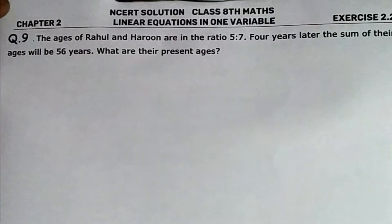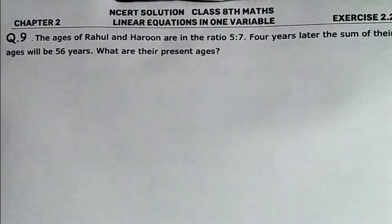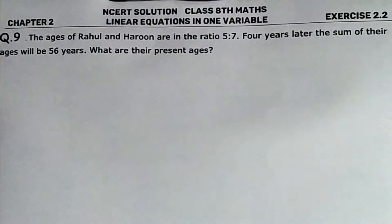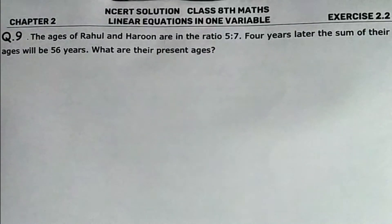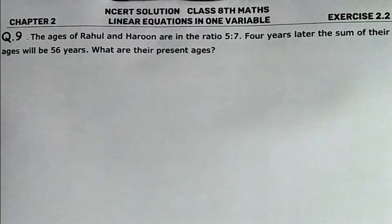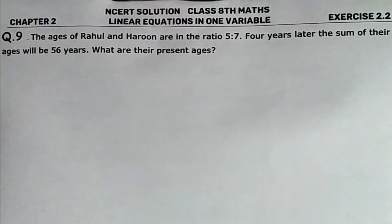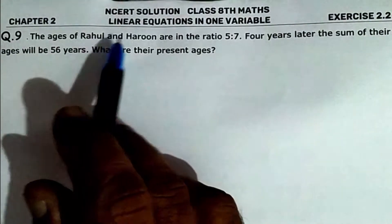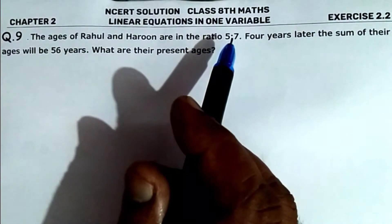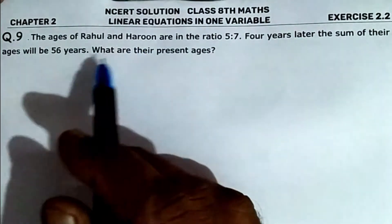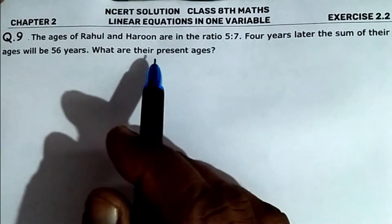In this video I am explaining NCERT solution Class 8th Math Chapter 2, Linear Equations in One Variable, Exercise 2.2, Question 9. The ages of Rahul and Haroon are in the ratio of 5 to 7. Four years later the sum of their ages will be 56 years. What are their present ages?